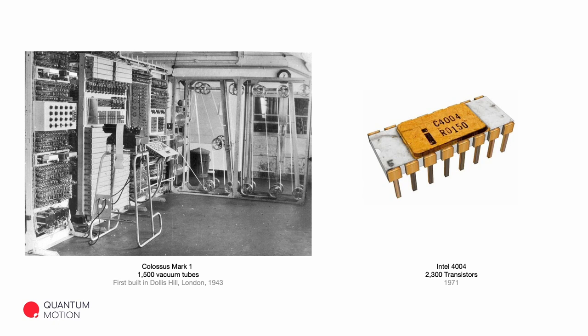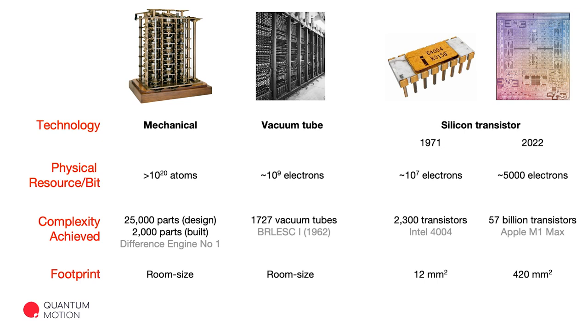The real revolution in computing that's changed our society over the last 50 years was driven by the move to using silicon transistors and encoding information within the states of these transistors. The silicon integrated circuit went from a proof-of-principle concept in the late 1950s to the first commercial microcontroller in 1971, radically changing how computers worked and reducing their cost, footprint, and power consumption. Only the silicon transistor was able to demonstrate this remarkable million-fold increase in complexity — from thousands of transistors in the first microprocessors in the 1970s to tens of billions in modern silicon chips.